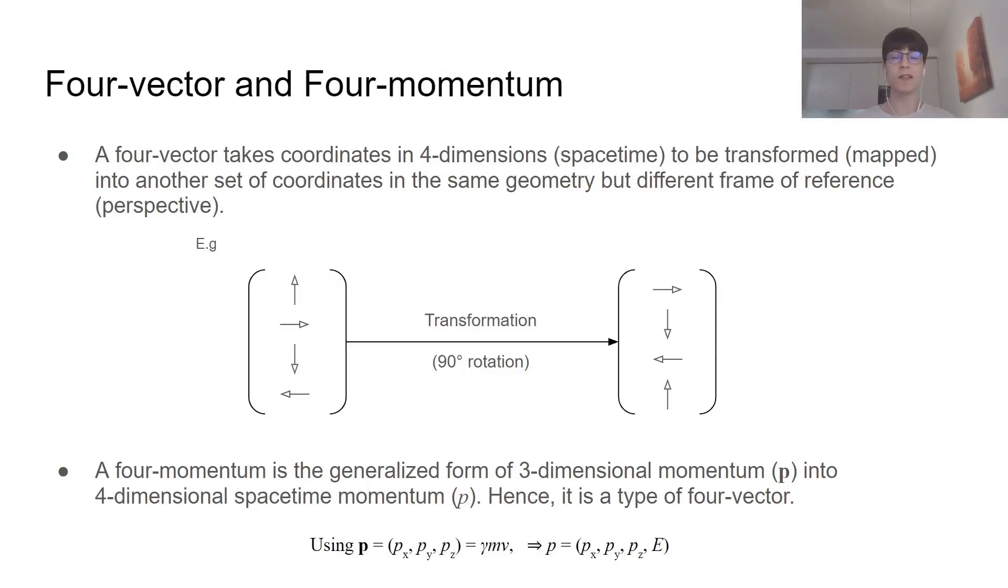A key concept in relativistic kinematics, the study of movement near the speed of light, is a four-vector. In general, a four-vector takes coordinates in four-dimensional space-time to be transformed, mapped, into another set of coordinates in the same geometry, but different frame of reference or perspective. For example, look at how each of those arrows change uniformly, rotating by the same angle. That is what we call a linear transformation. In this case, a rotation by 90 degrees.